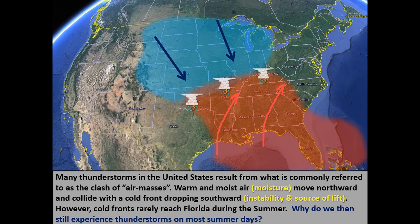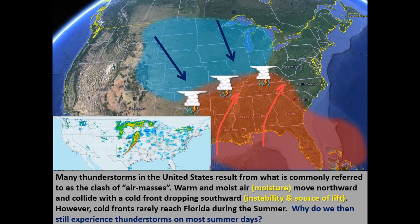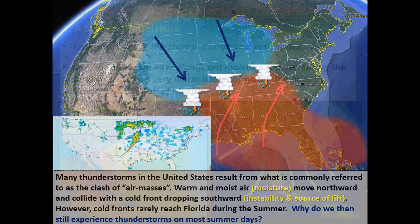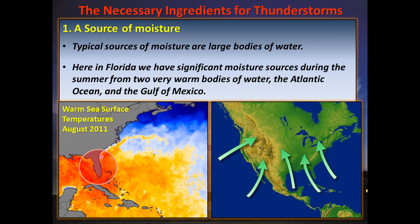So you may ask yourself, why do we still experience thunderstorms on most summer days? Let's take a look at those three ingredients, the first being a source of moisture. Typical sources of moisture are large bodies of water. Here in Florida, we have significant moisture sources during the summer from two very warm bodies of water: the Atlantic Ocean and the Gulf of Mexico.